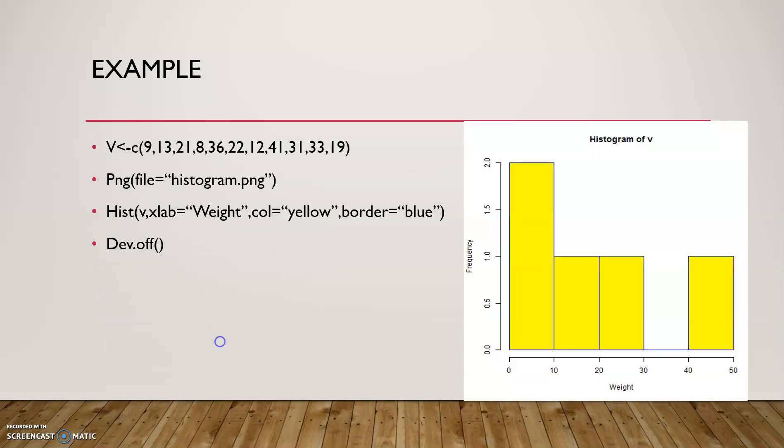xlim and ylim are used to specify the range of values on the x-axis and y-axis. breaks is used to mention the width of the bar. Example of the histogram: chart name is histogram.png, hist of v, xlab equal to weight, and color is yellow, border is blue.